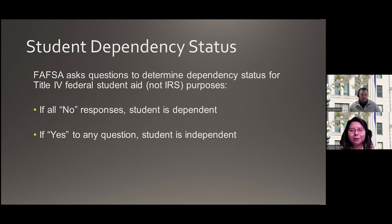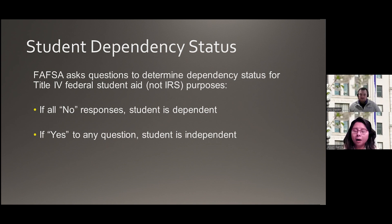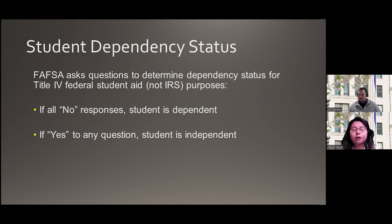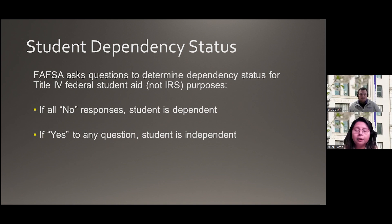Students, be mindful of dependency status questions — these can trip anyone up. Remember, this is asking from your perspective. If you answer no to any dependency status questions, the FAFSA will automatically assume you are dependent and move forward to collect parental information. If you answer yes to any of these questions, the FAFSA will deem you independent and not ask for parent information. At this time, corrections cannot be made to your FAFSA, so if you accidentally answer yes, it will extend processing time, but we can always work with you on documenting that.